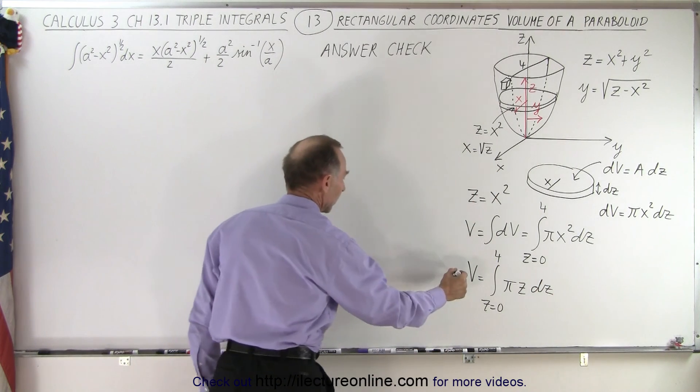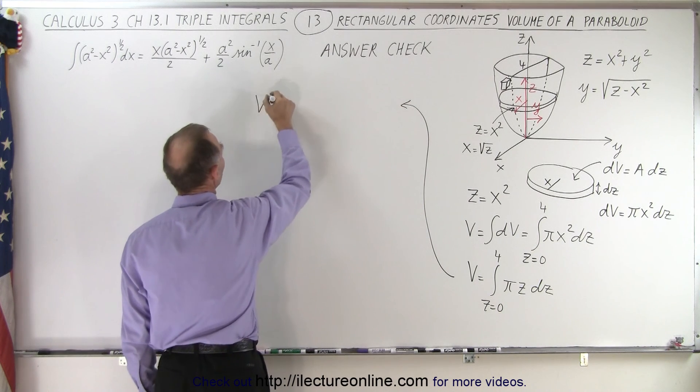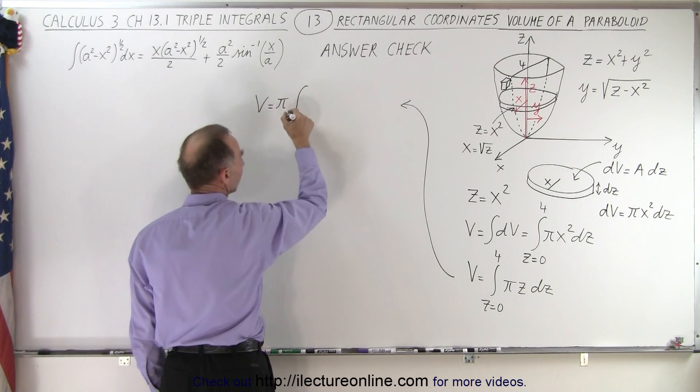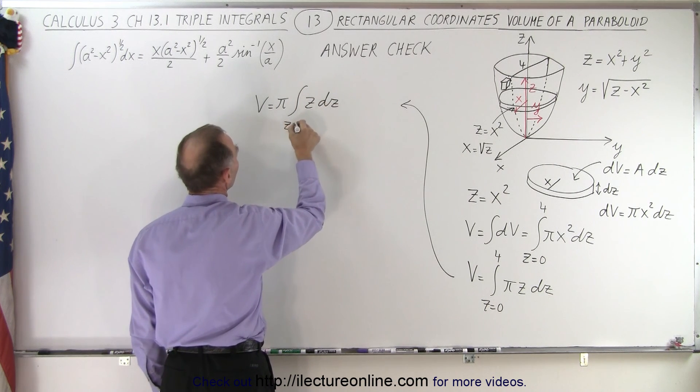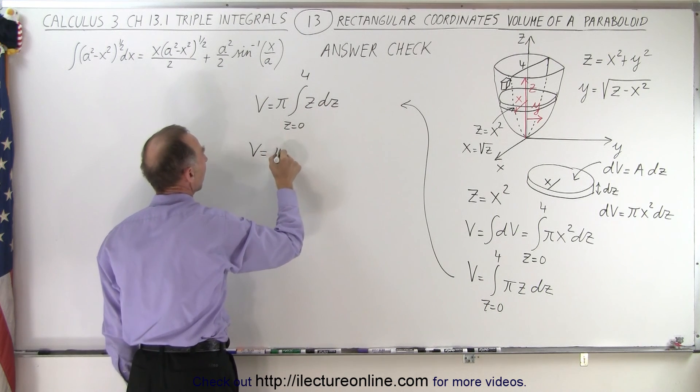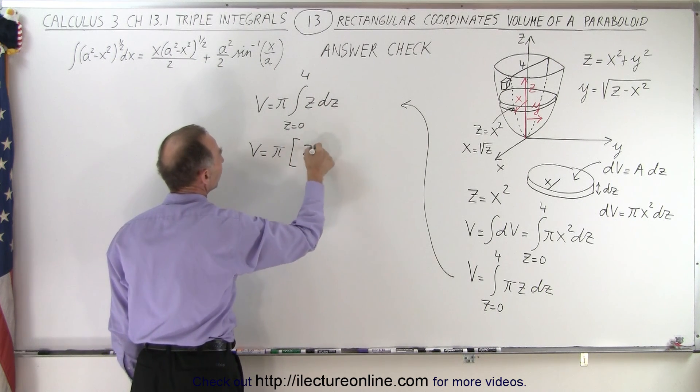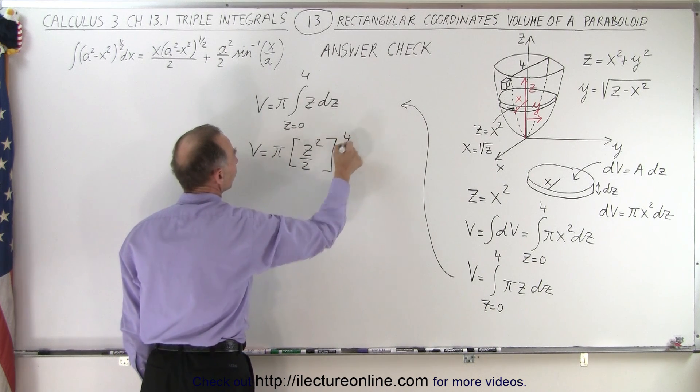The π can come outside the integral sign because that's a constant. So V = π times the integral of z dz, where z goes from 0 to 4. We have V = π times z²/2, evaluated from 0 to 4.